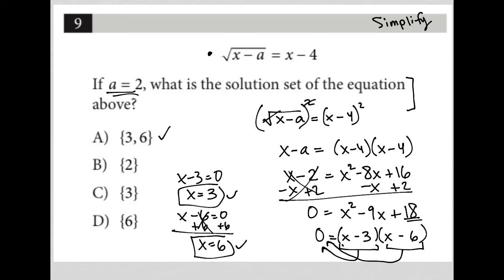If I plug this back into the original equation, if I plug the 3 in, I'd have 3 minus - again, a is 2 - so 3 minus 2 is equal to 3 minus 4. And that tells me that the square root of 1 is equal to negative 1.